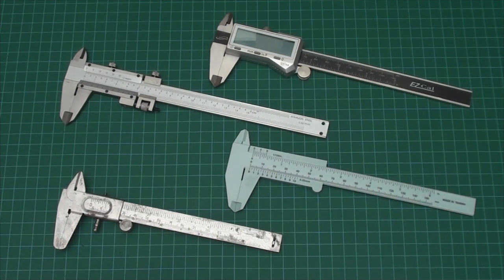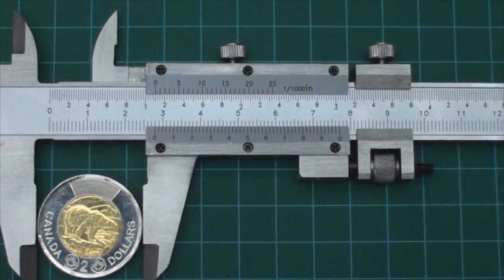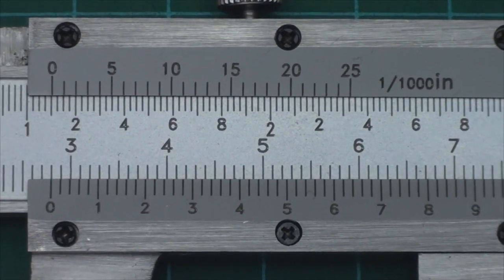Okay, so the top one is digital and it doesn't count, so pretend you can't see it. Just notice that the other ones all share the same scale developed by Pierre Vernier for precise measurements, accurate to one one-hundredth of a millimeter and one one-thousandth of an inch.